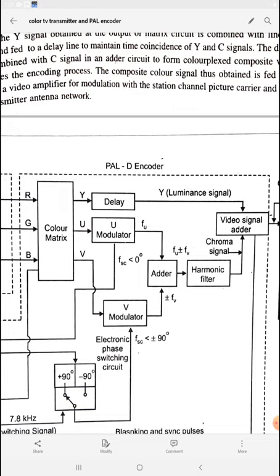The U signal is the weighted color difference signal applied to your U modulator, and the V signal is also a weighted color difference signal applied to your V modulator. Before the U modulator there is a low pass filter block, and before the V modulator there is also a low pass filter. We use these low pass filters because U and V are low frequency signals, and these low frequencies are passed through with the help of the LPF. The low-frequency U modulating signal is then given to the U modulator, and the low-frequency V modulating signal is given to the V modulator.